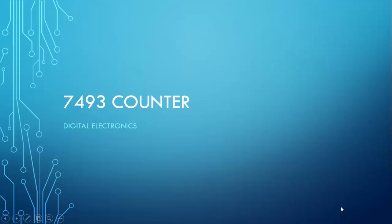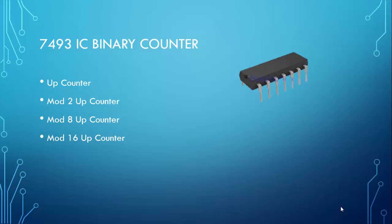So this is the 7493 counter. Previously we've been using JK flip-flops to do our counting, but now we're going to look at this integrated circuit that is a binary counter. It's an up counter, and it is a mod 2 counter and a mod 8 up counter, both made from JK flip-flops, but we can combine those to make a mod 16 up counter.